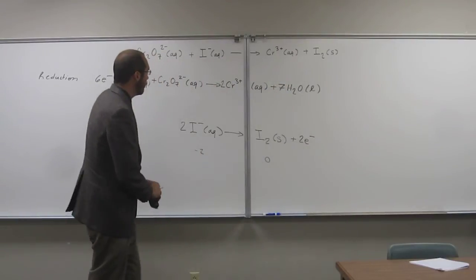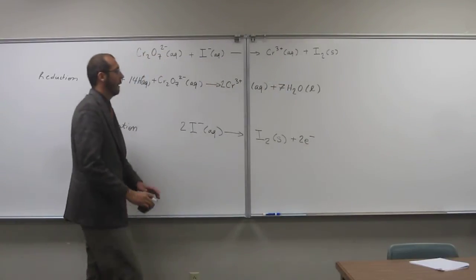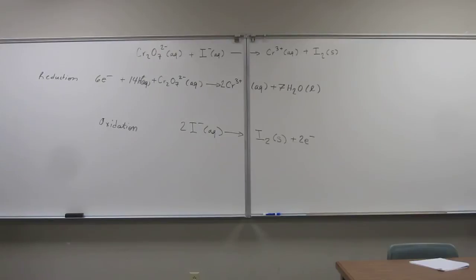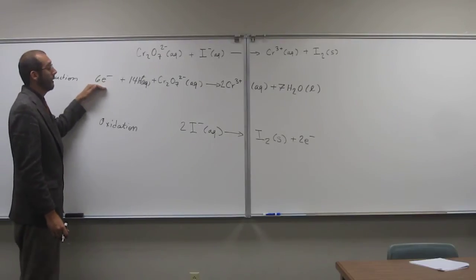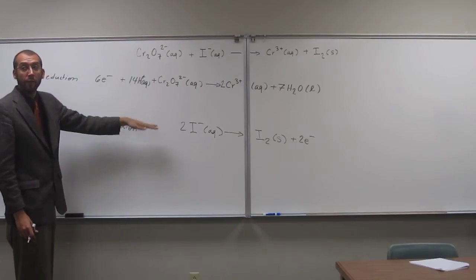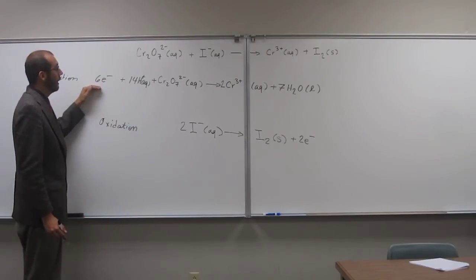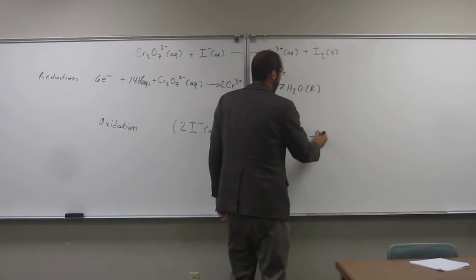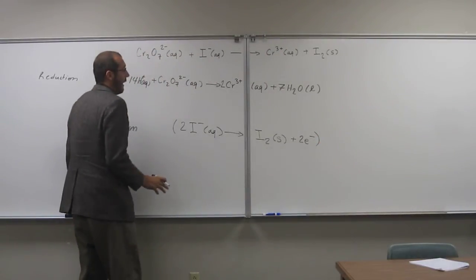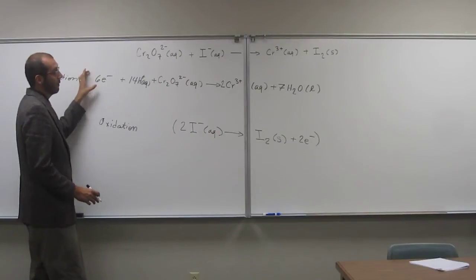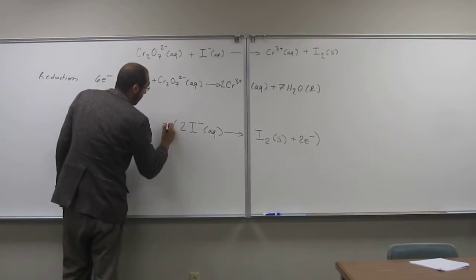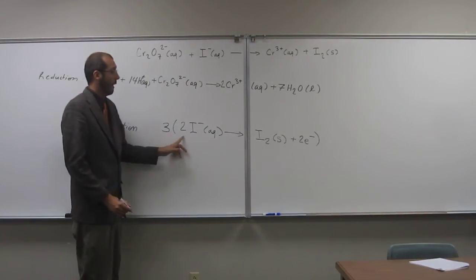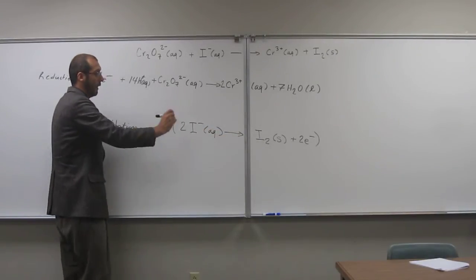So hopefully you see that everything's balanced. If you don't, go ahead and recheck yourself. OK, so now the thing you probably have noticed is that the number of electrons is different between the two half-reactions. So what we're going to do is balance those electrons. So in order to do that, we're going to have to find some sort of common factor. And of course, six and two, we can multiply this thing by three. So we have to multiply everything by three. It's just like an algebraic equation.